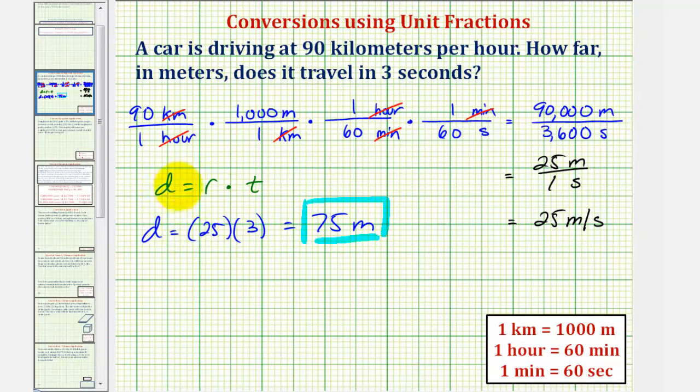We could have written this as the distance equals the rate of 25 meters per 1 second, times the time of 3 seconds, which can be written as 3 seconds over 1.